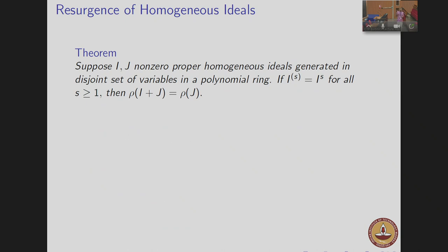We proved certain bounds for the resurgence in the paper with Thay, Ha, Sankhneel, and Abu. We have an upper bound and a lower bound. If the symbolic powers of one of them coincide with the ordinary powers, then the asymptotic resurgence and resurgence of the sum i+j equals the resurgence of the other ideal.